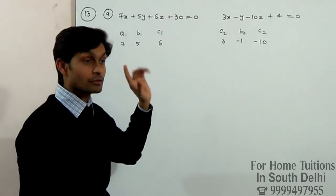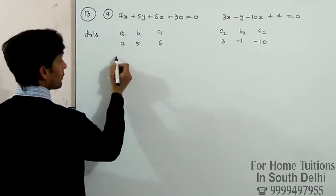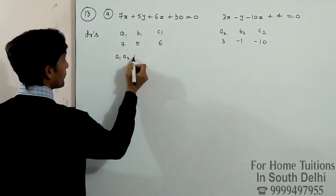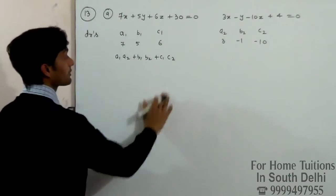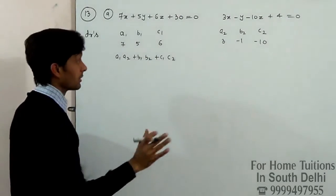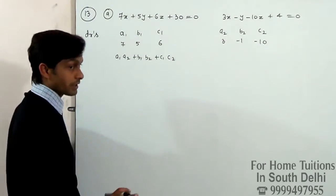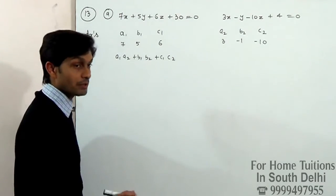Perpendicular at angle - so A1, A2 multiply. A1*A2 plus B1*B2 plus C1*C2. If you have 0, then it will be perpendicular to the line at angle.